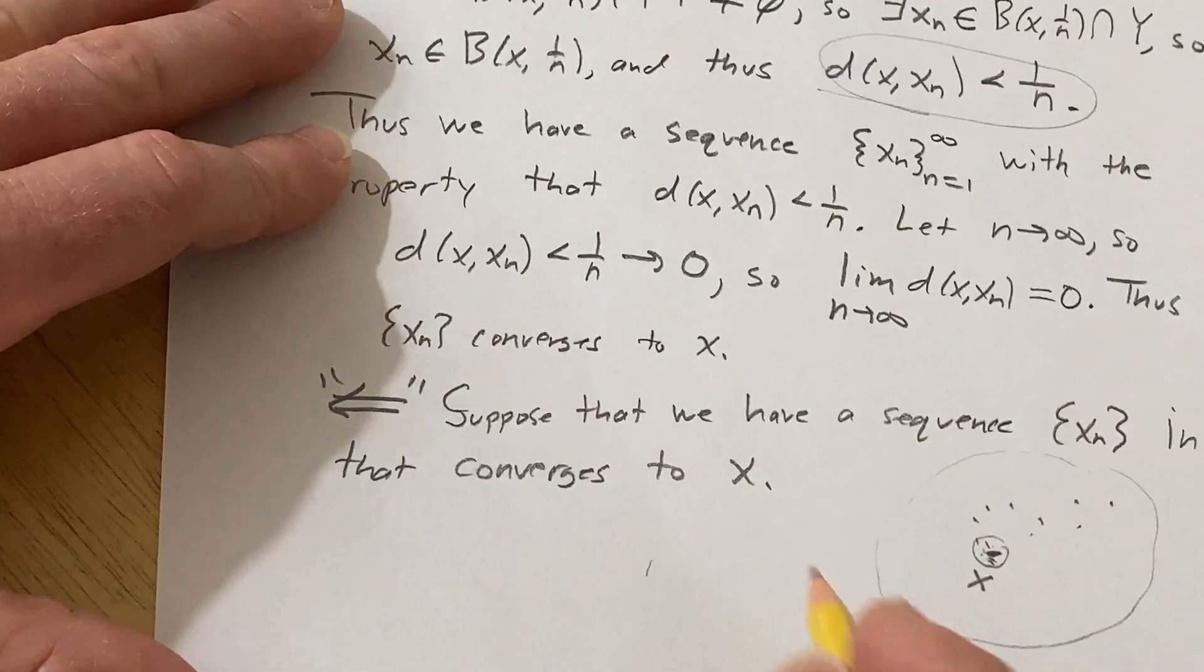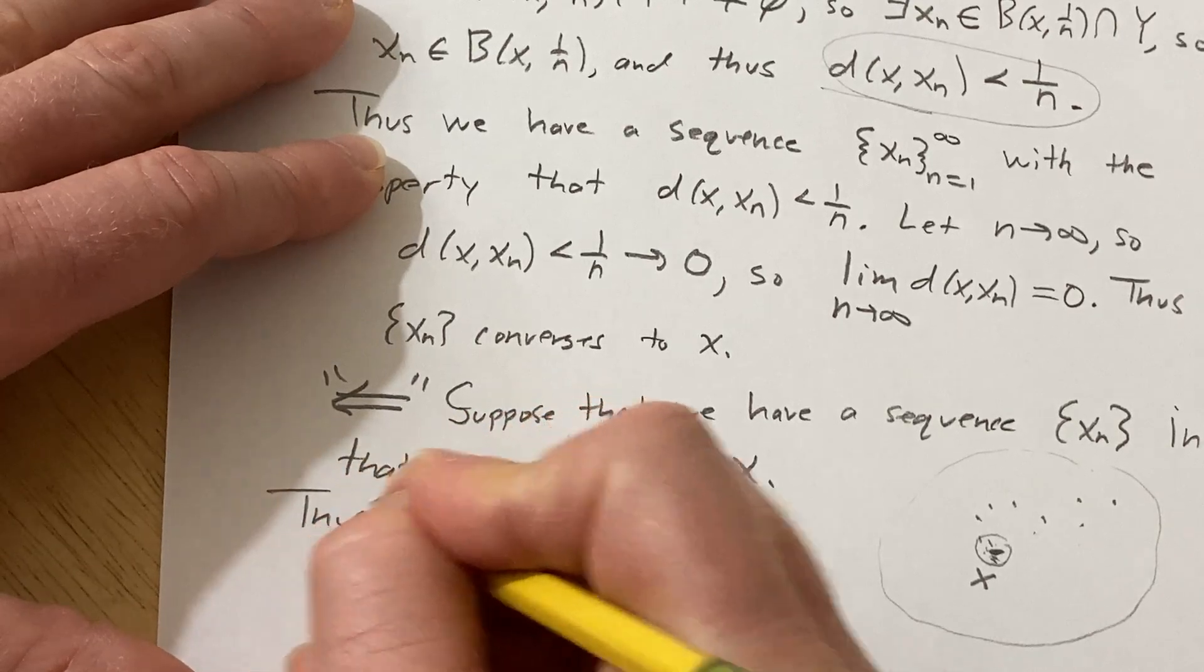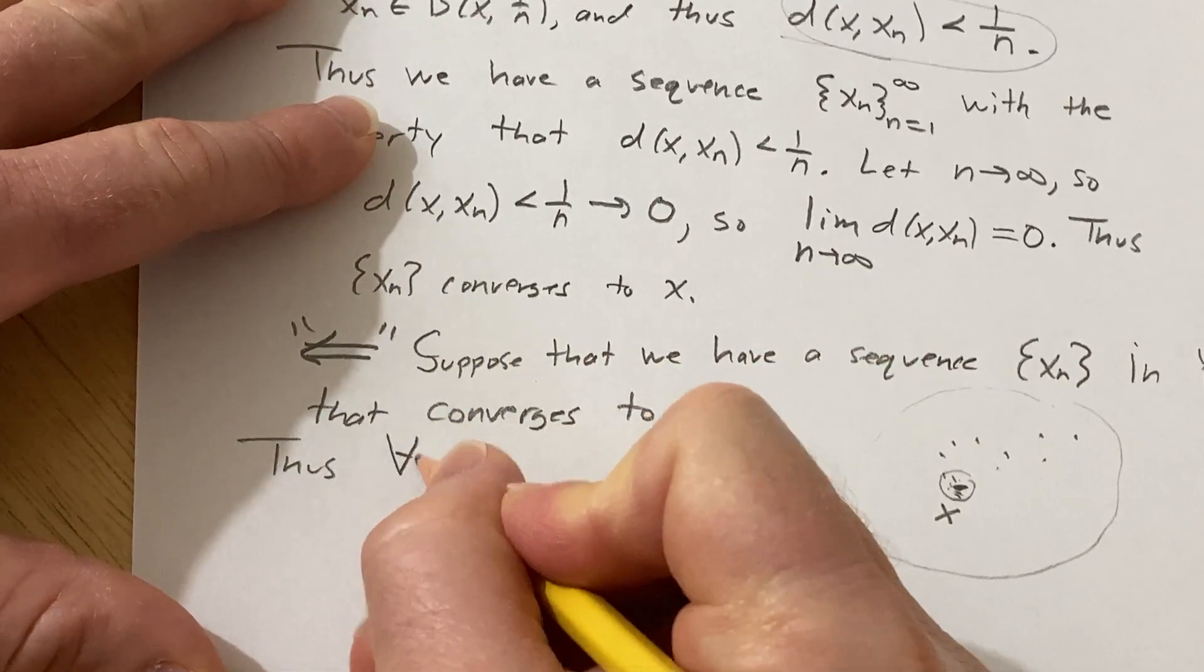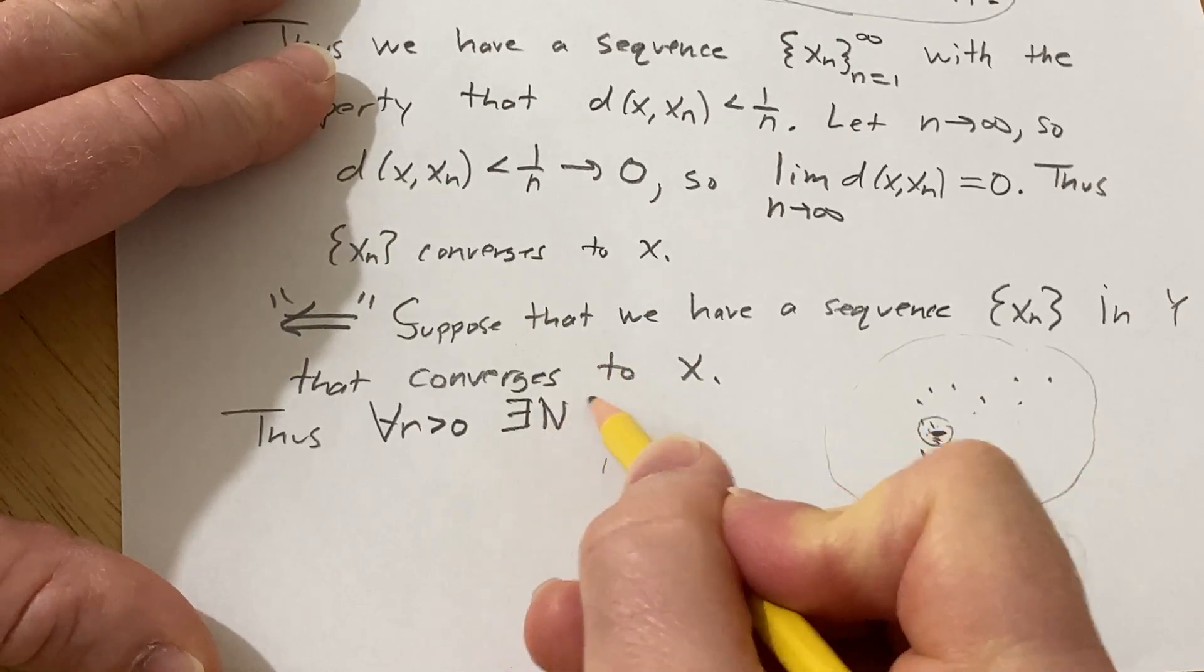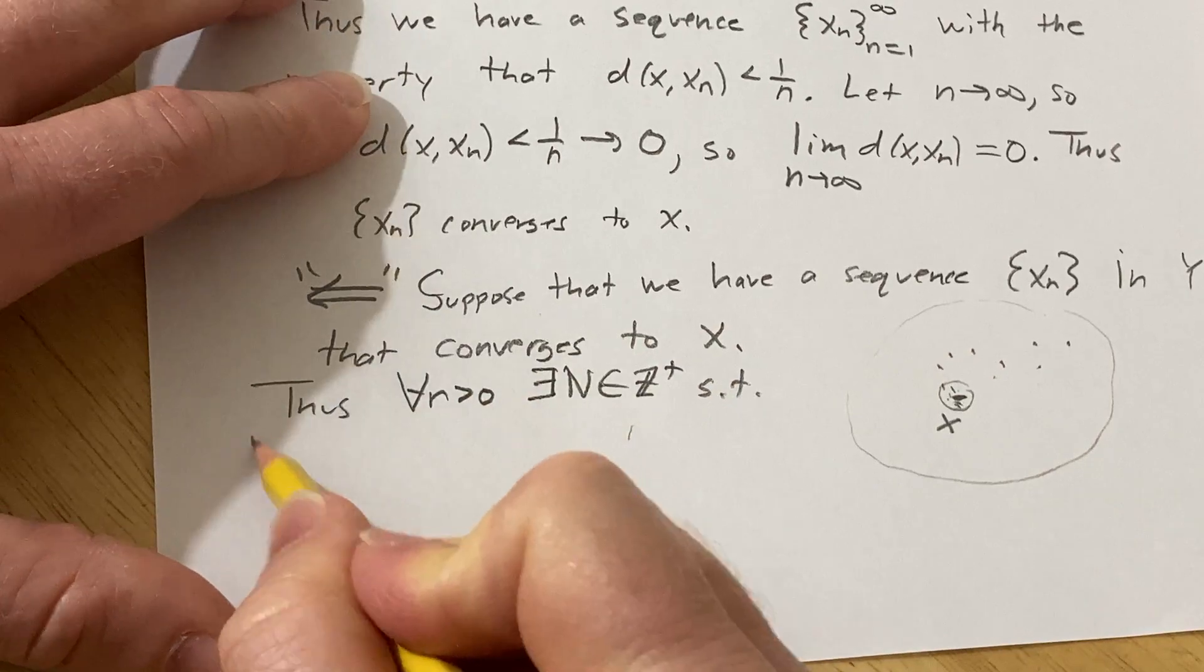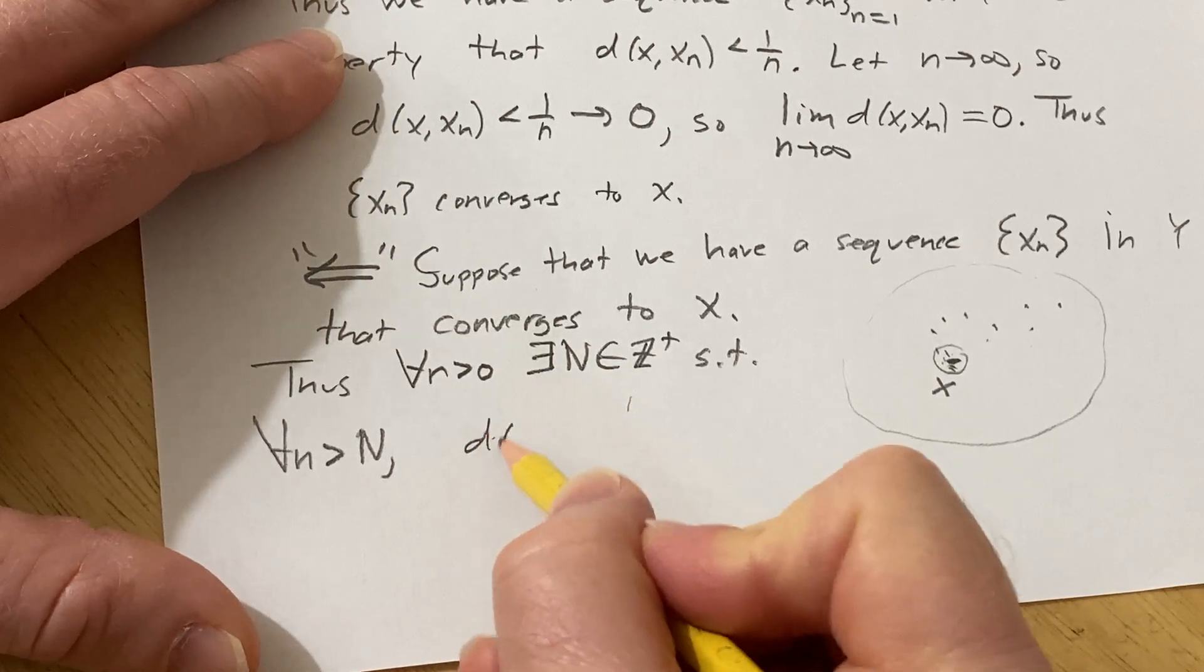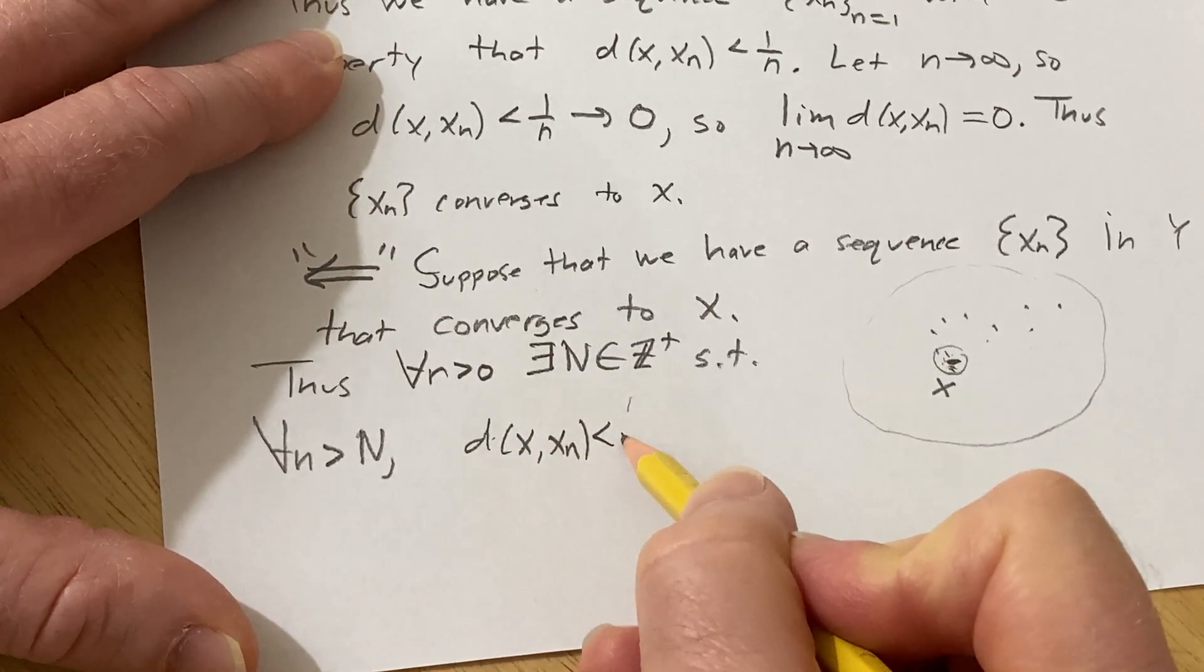So it's a sequence in Y, so the fact that it's in Y is clear. And this is going to be true because it converges to x. So let's go ahead and just justify it a little bit better. So what does this mean? Let's use epsilons here to justify it. So thus, instead of saying for all epsilon, I'm going to say for all r just to match the definition here. Thus, for all r greater than zero, there exists a positive integer such that for all n greater than capital N, we have that the distance between x and x sub N is less than r.